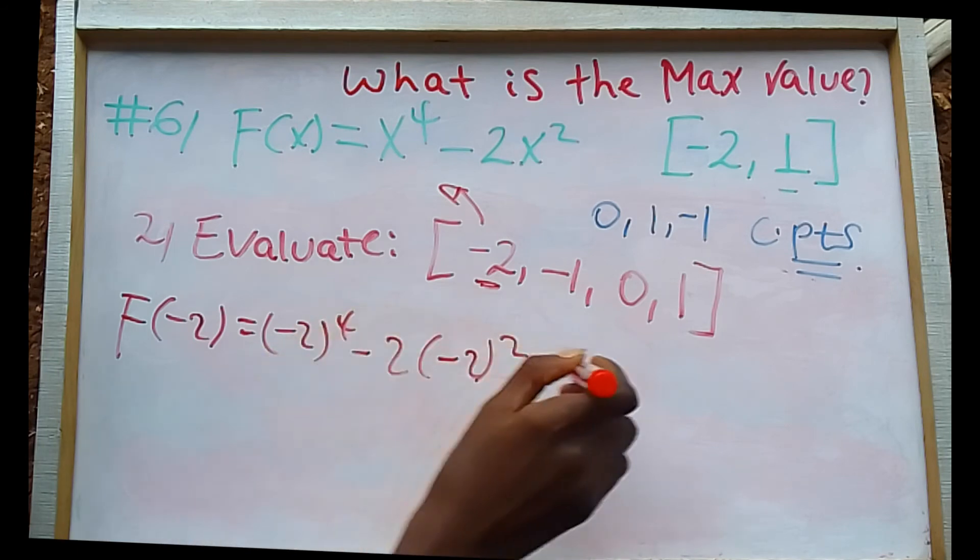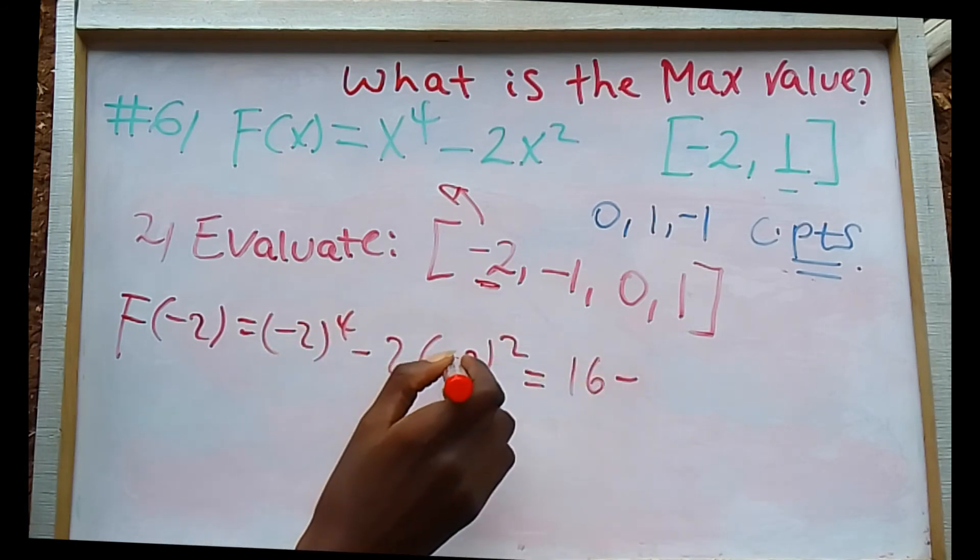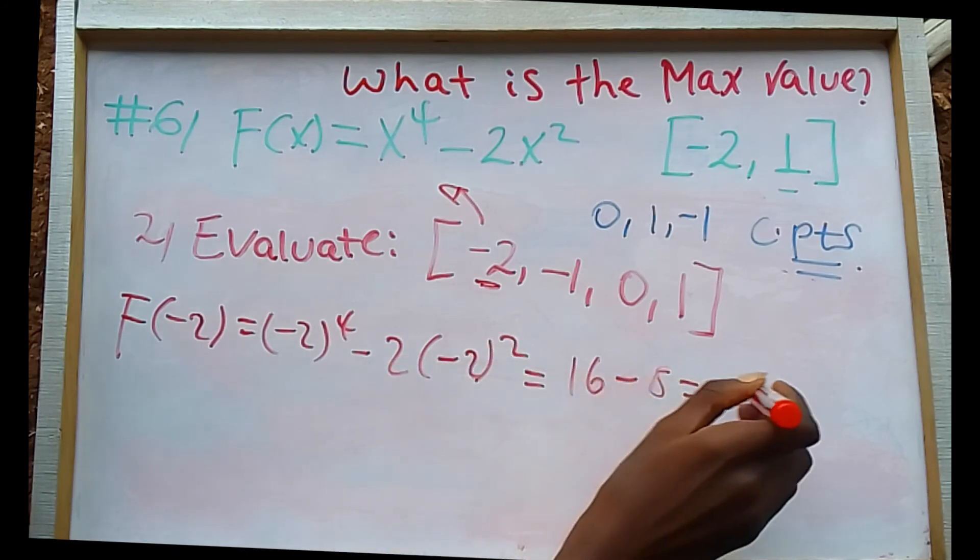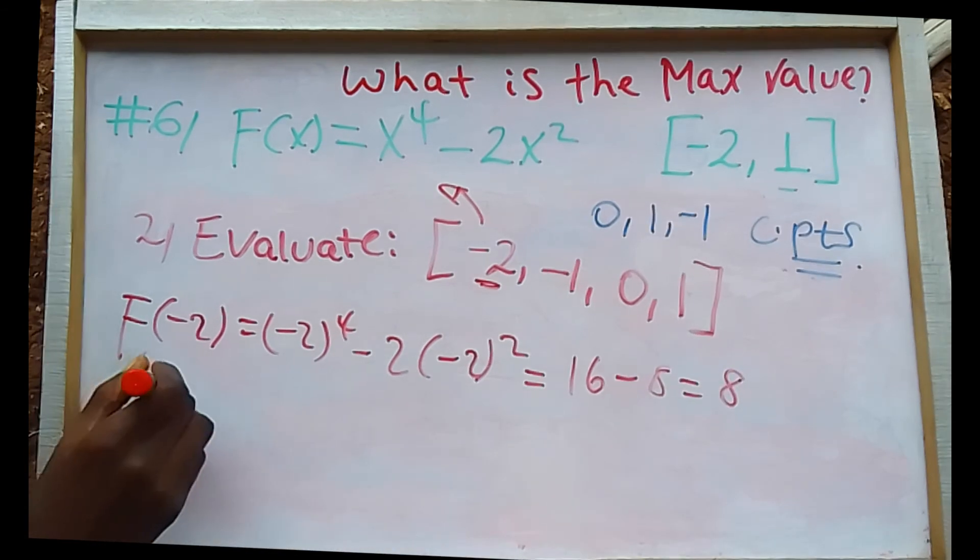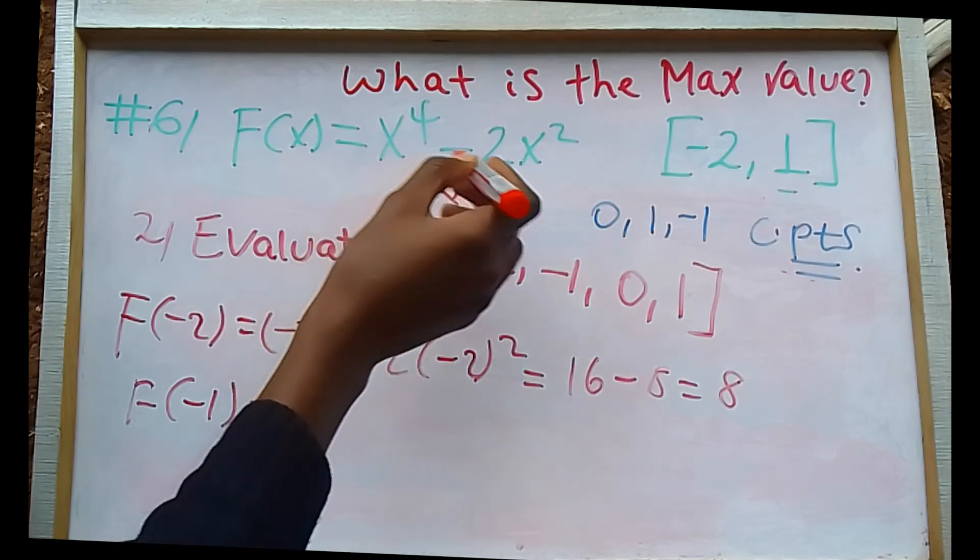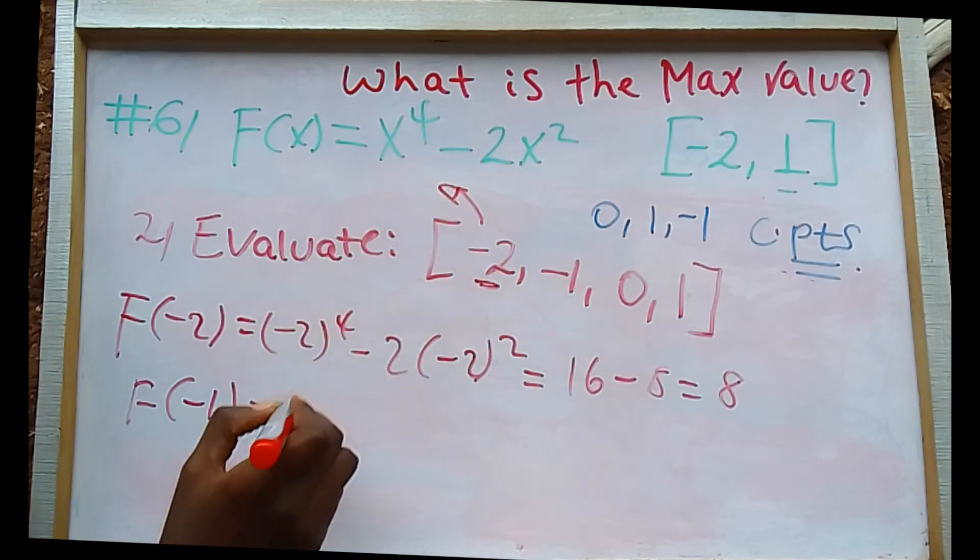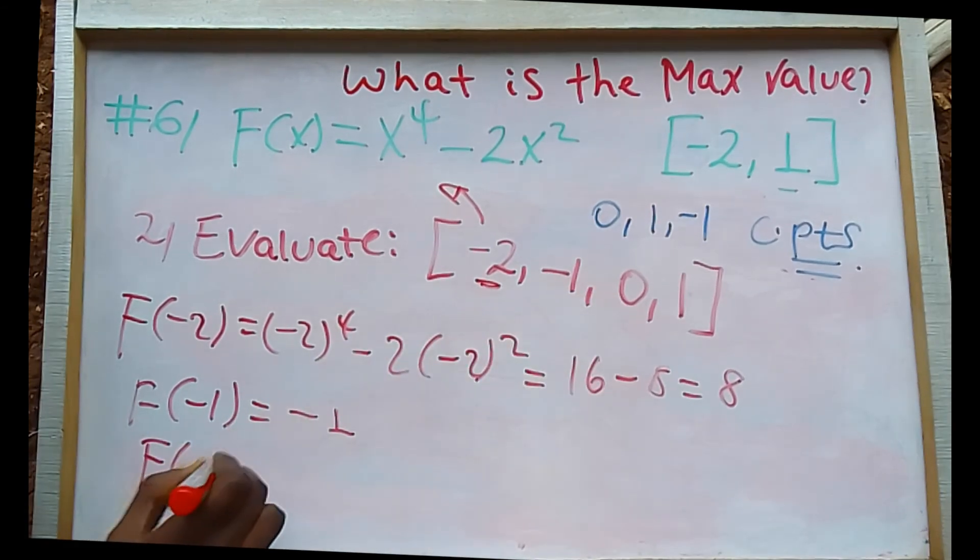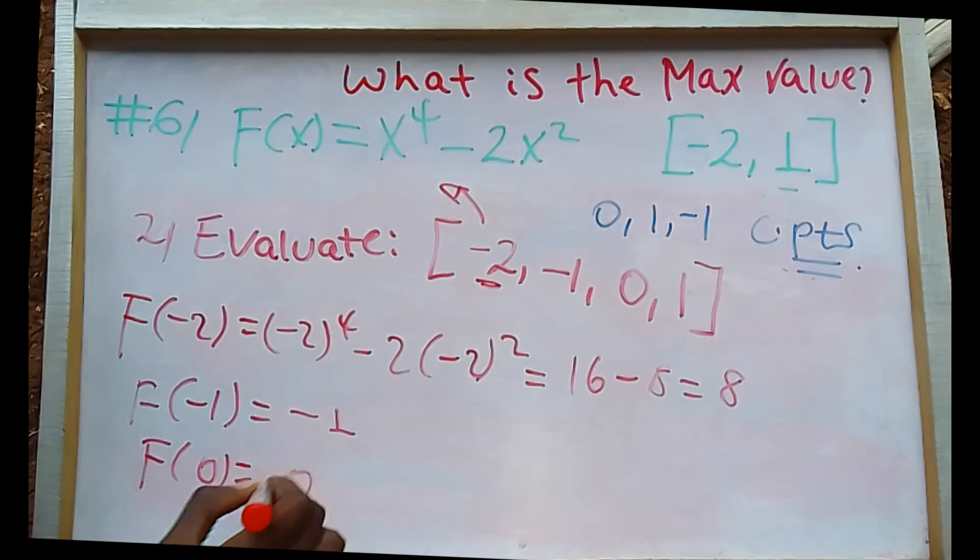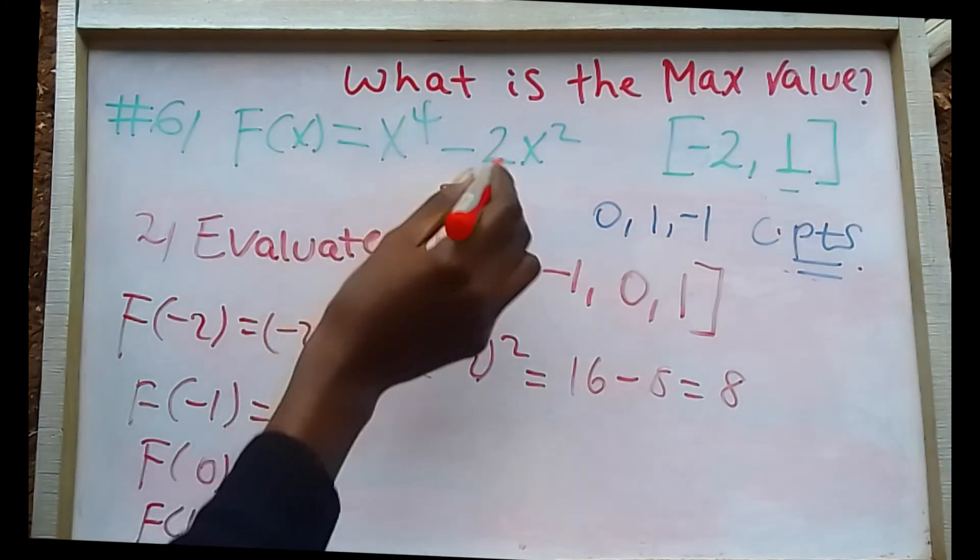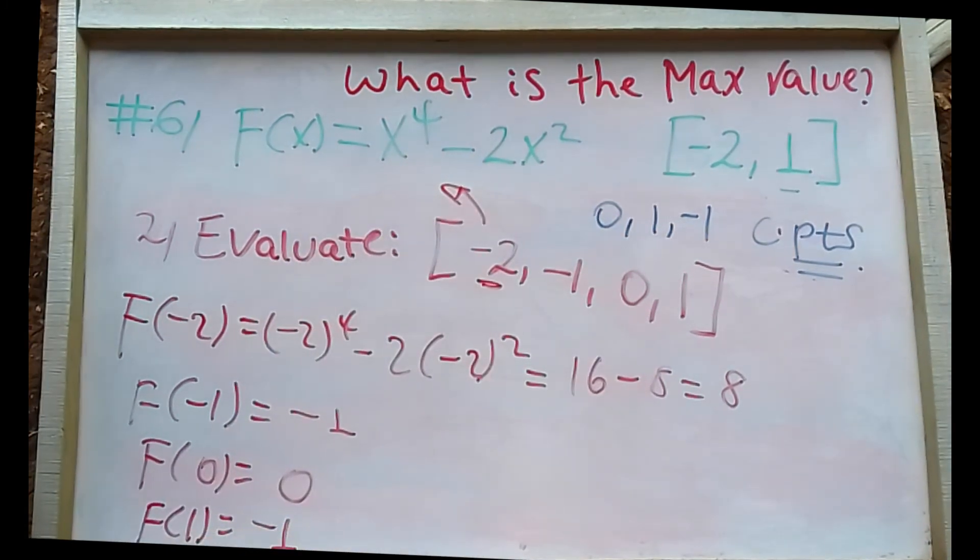F of minus 2: minus 2 to the power of 4 is 16, minus 2 times minus 2 squared, which is minus 8. So 16 minus 8 is 8. F of minus 1 is minus 1. F of 0 is 0. F of 1 is minus 1.